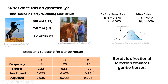Looking back at the original stock, we can see that a majority of the horses had a mild temperament and a genotype of big T, little t. This gives us the frequency of big T and the frequency of little t before selection.